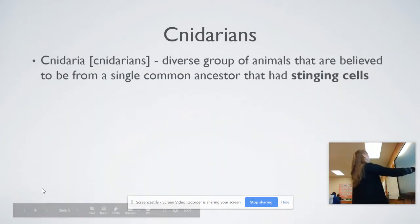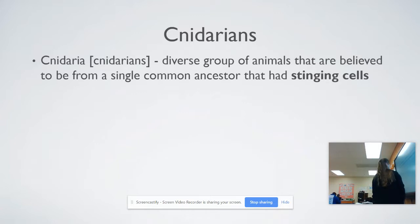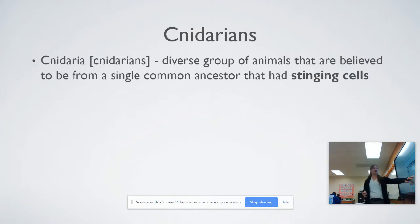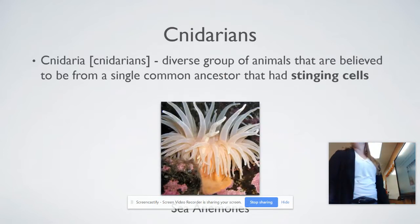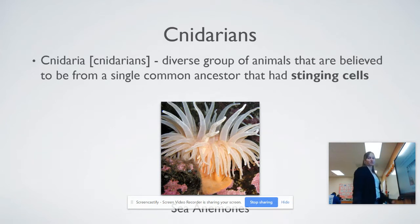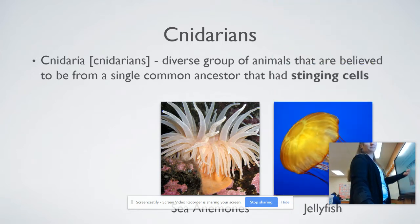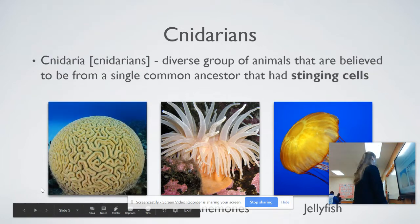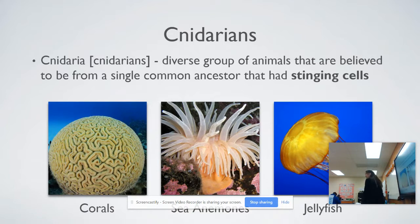The defining characteristic of Cnidarians is they must have stinging cells. That original ancestor had to have stinging cells. This is a sea anemone — that's what Nemo lived in — with stinging cells. There are also jellyfish, which you're familiar with. And coral. A lot of people don't realize that jellyfish and coral are in the same phylum.